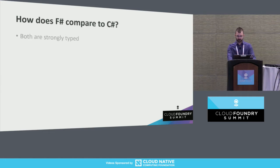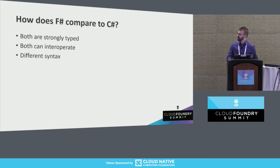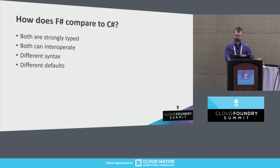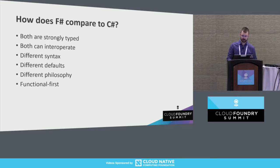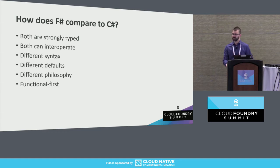So how does it compare to C#? They're both .NET languages, so they work with each other, but the syntax is obviously different. They have different defaults, which we'll get into. It's functional versus object-oriented. They have a different history — the philosophy behind them and the reasons they exist are different; they solve different problems. F# is functional first, which means it's not purely functional. You can still do just about everything you can do in C#, even though you might not want to.